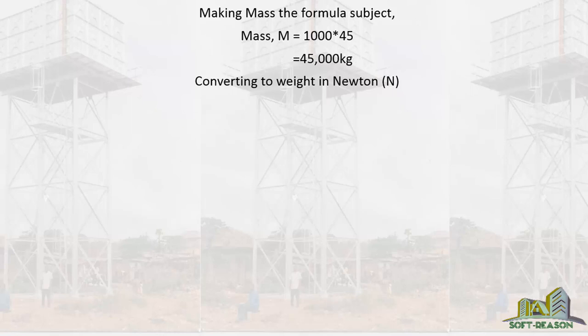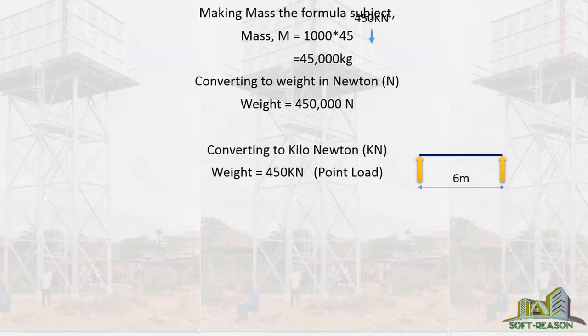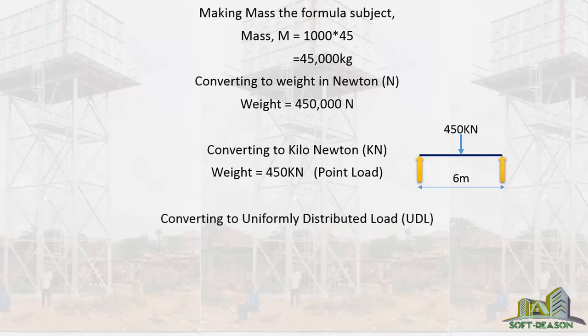Converting the mass in kilograms to weight in Newtons: weight equals 450,000 Newtons. You can also convert it to kiloNewtons: weight equals 450 kiloNewtons, which is a point load.